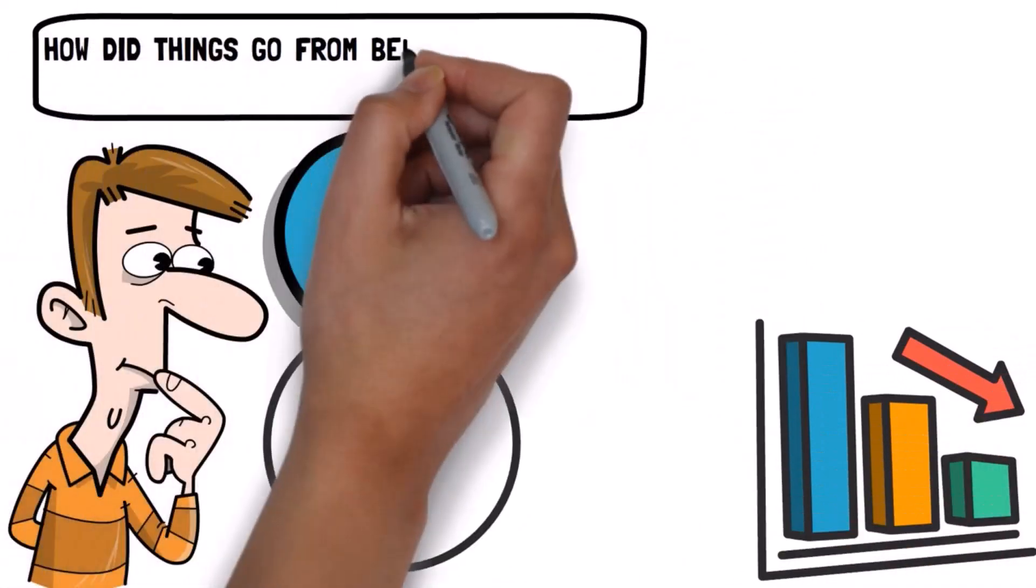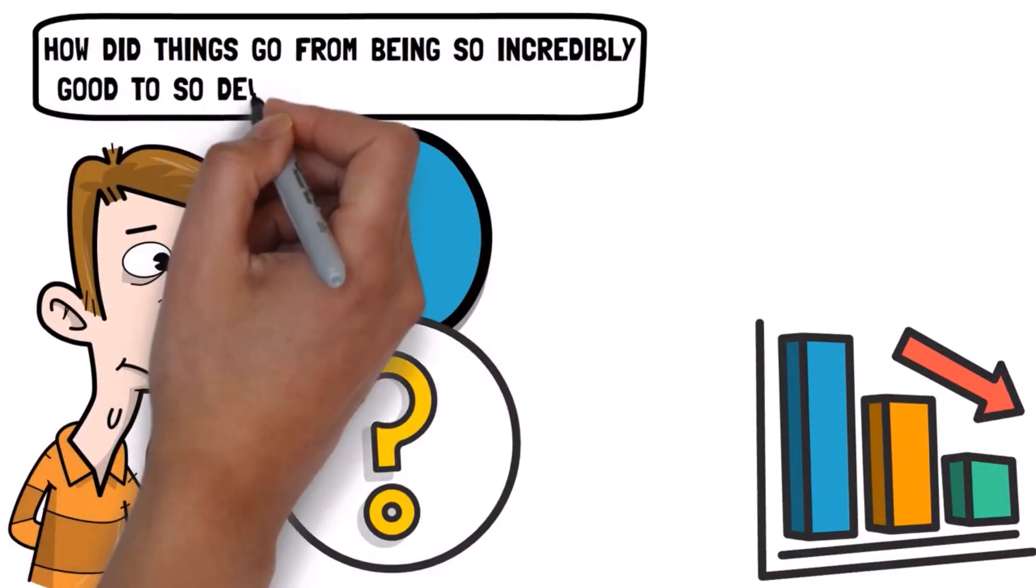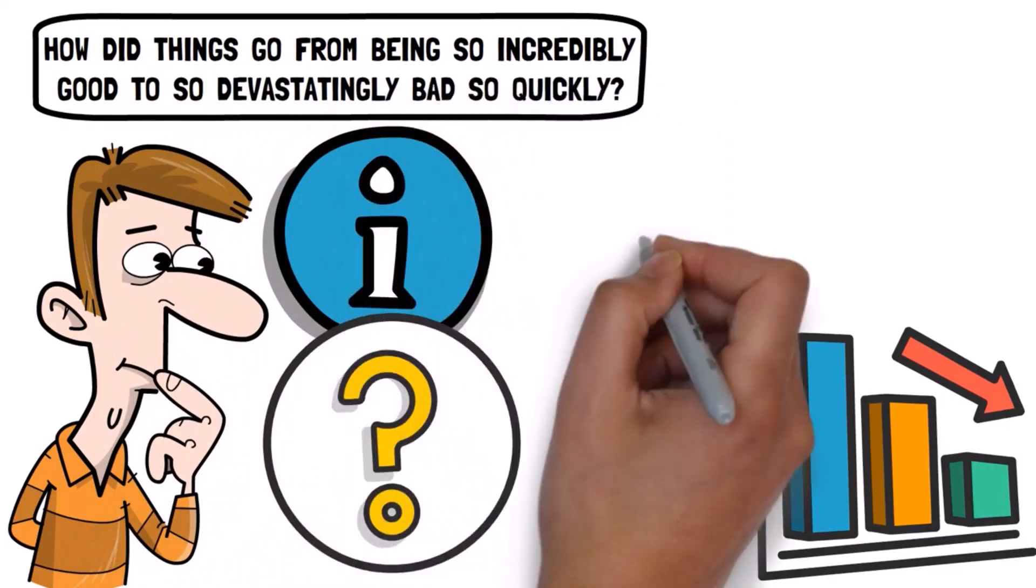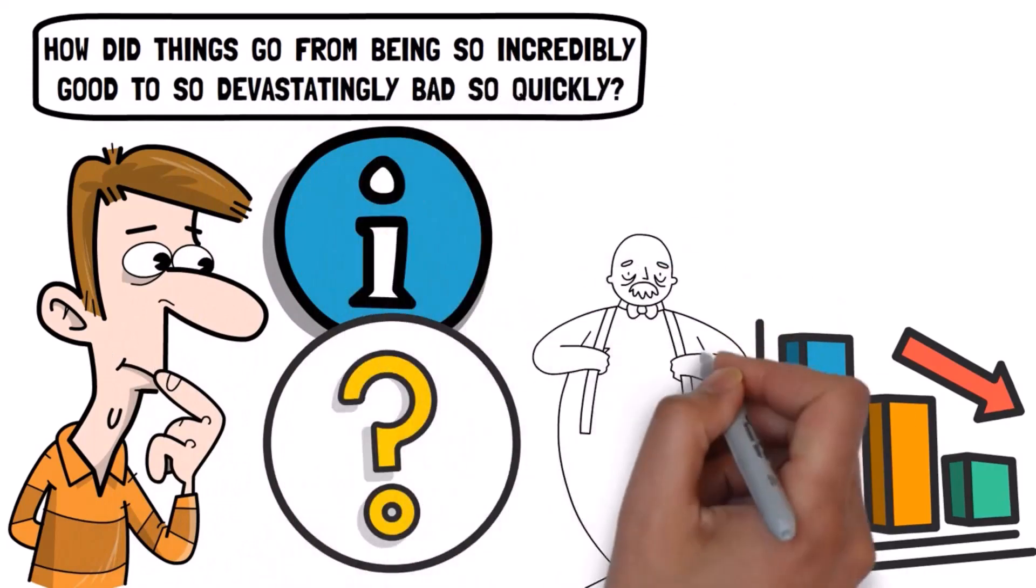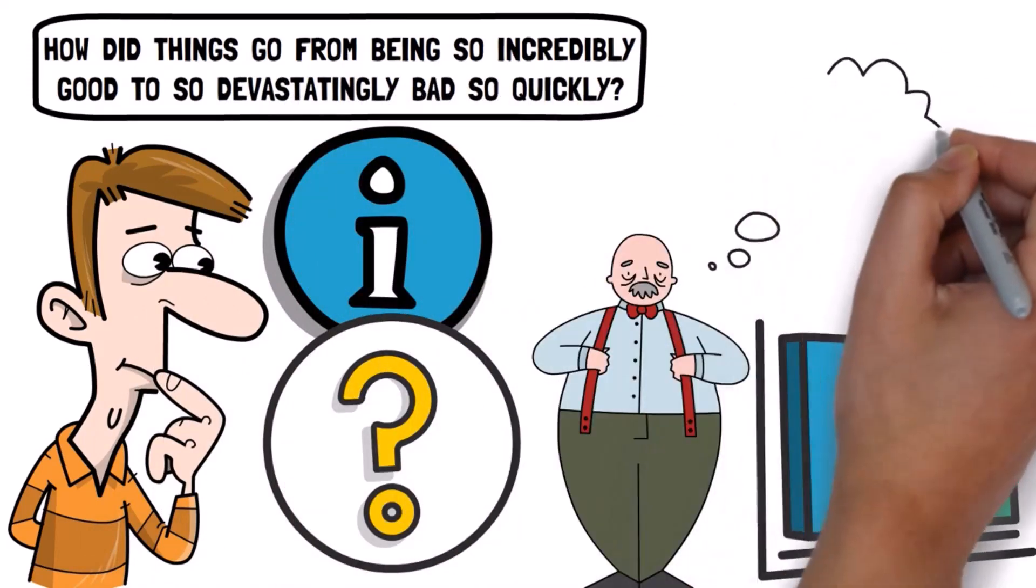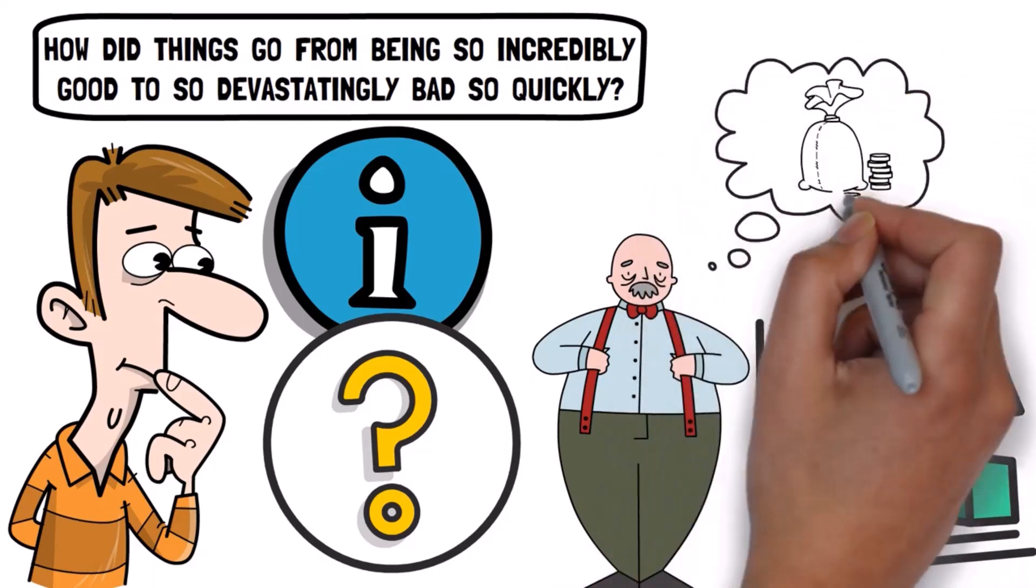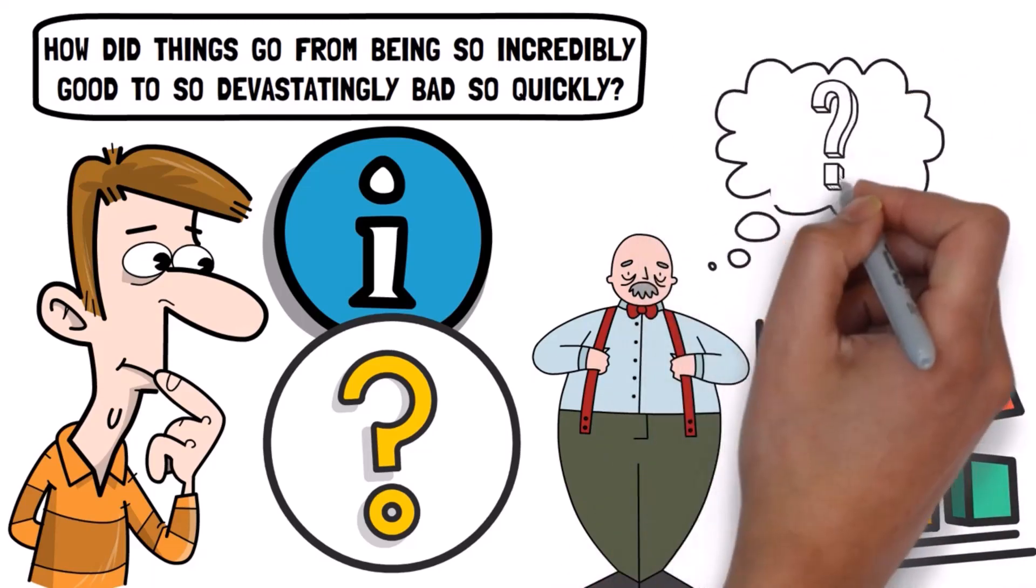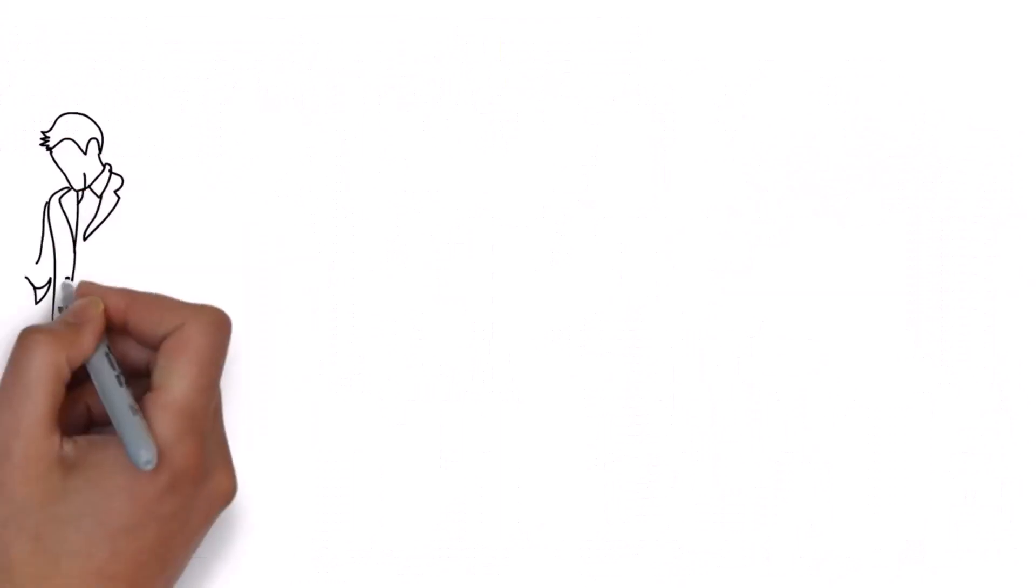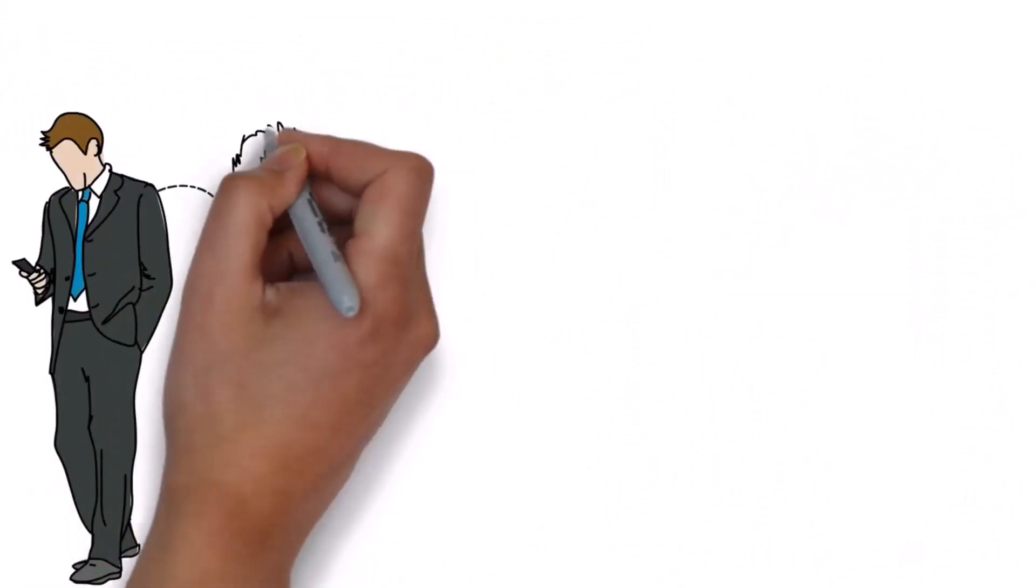How did things go from being so incredibly good to so devastatingly bad so quickly? I would sit there and ask my grandpa these questions to see if he had any answers, to talk about how the money just disappeared. People were rich, they had abundance, and then suddenly they had nothing.